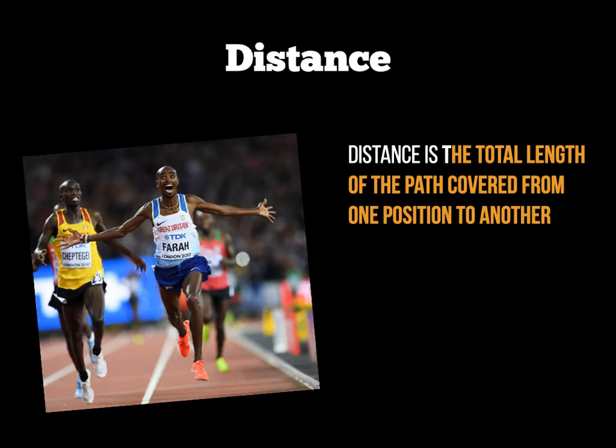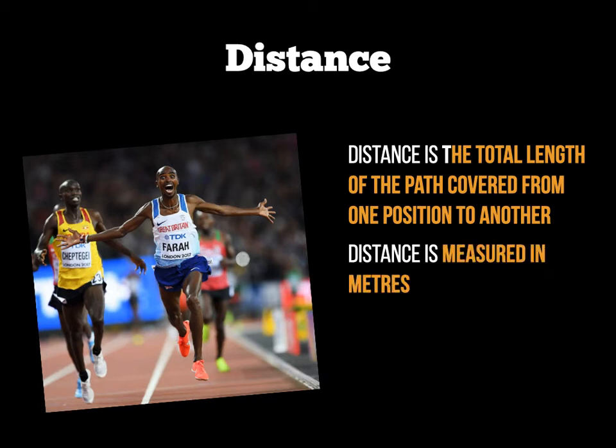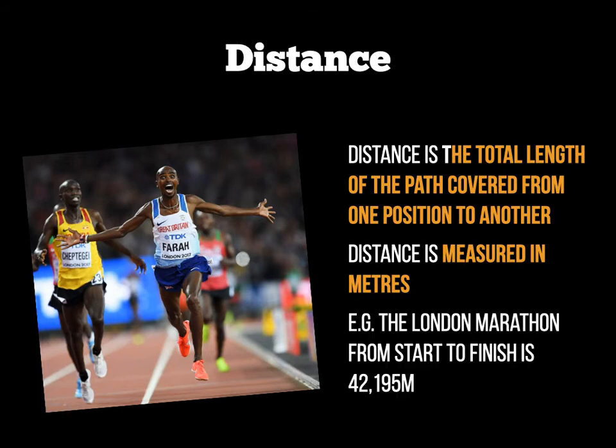Distance is defined as the total length of the path covered from one position to another — essentially, how far you have travelled, measured in metres. A good example is the London Marathon, which is 42,195 metres. That would be the total distance Mo Farah travelled from start to finish.